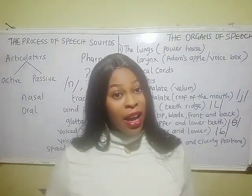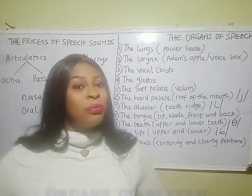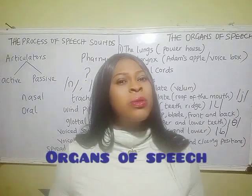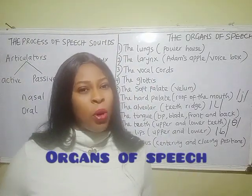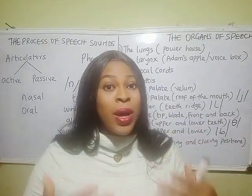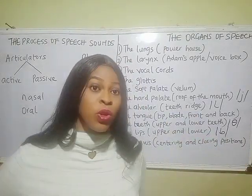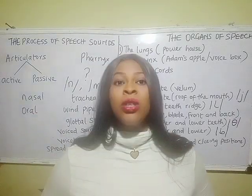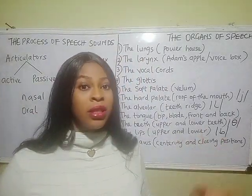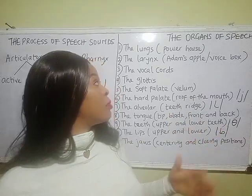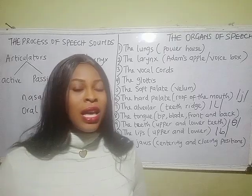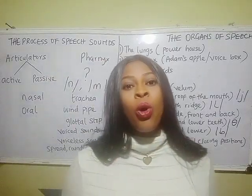It starts from within. It starts from the organs of speech. Organs of speech are those parts of the body that enable us to produce and articulate speech. We have them in the chest region and the mouth region. The ones in the chest region are the lungs, the larynx, the vocal cords, and the glottis. The ones in the mouth are called articulators.